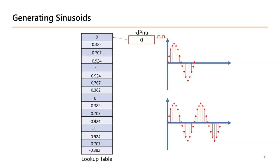Using this approach you can generate any arbitrary periodic waveform using the lookup table approach. As I said before, the quality of the output depends on how many samples you have. As you increase the number of samples the size of the lookup table also increases, so we may need more memory — that is the side effect.